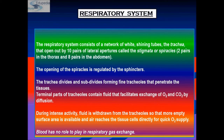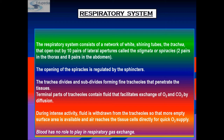The respiratory system consists of a network of tracheae that open through pairs of small holes called spiracles, also known as stigmata. These thin branching tracheal tubes carry oxygen from air to all parts of the body. The opening of the spiracles is regulated by sphincters, which act like gates. Gas exchange takes place by diffusion through the tracheoles.